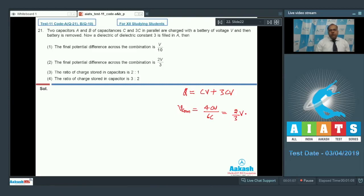And now the potential across both the capacitors are same. So the ratio of charge is in the ratio of their capacity that is 1 is to 1. So option 2 is the correct answer.